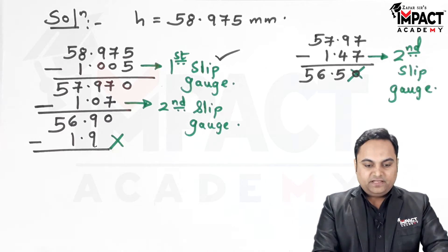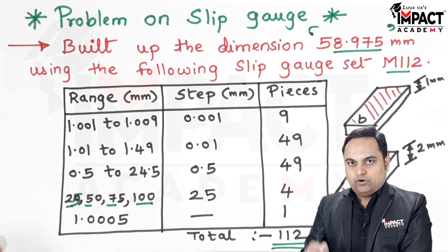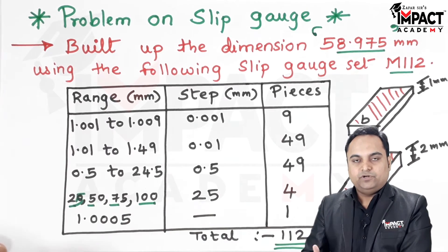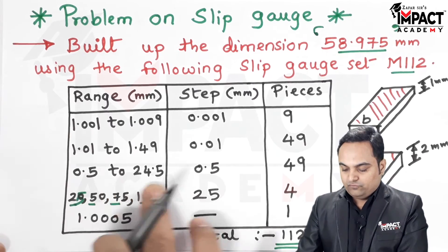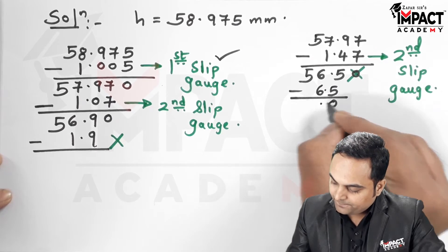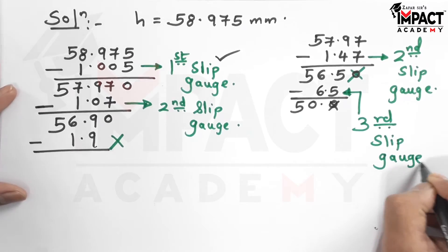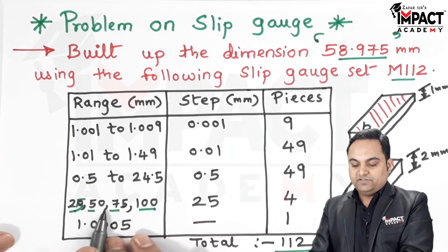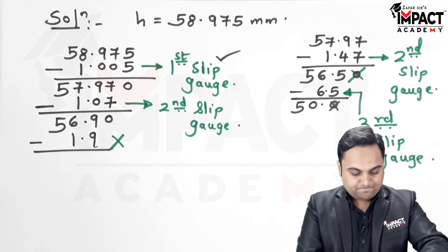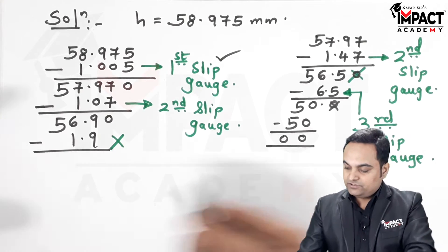From 56.5, we look at the third range (0.5 to 24.5 in 0.5 mm steps). The value 6.5 is available in this range, so subtracting 6.5 from 56.5 gives 50. That is the third slip gauge. Finally, 50 mm is available in the fourth range (blocks of 25, 50, 75, 100), so it is selected as the fourth slip gauge.